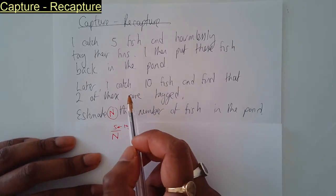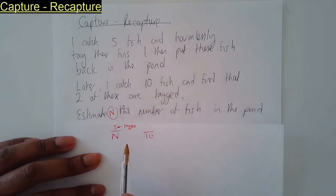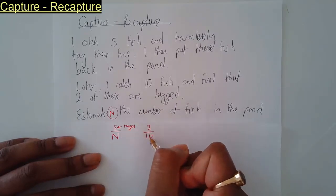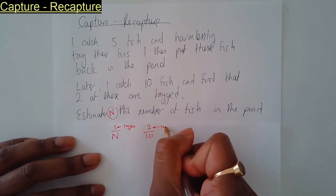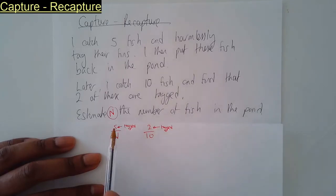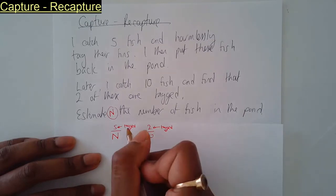Later, I caught 10 fish, and two of those—two out of ten—have to be tagged. Notice I put the tagged numbers on the numerator. Now I'm going to make these equivalent fractions.